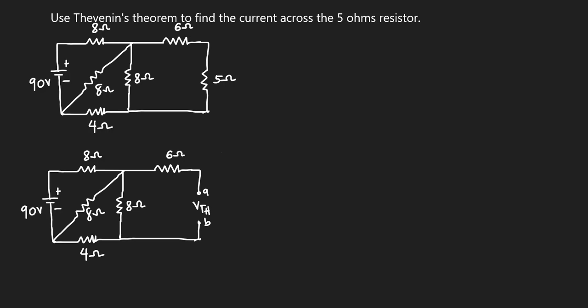To find the Vth, I will consider the left-hand part of this circuit. I will not consider the right part because there is an open circuit here. When current is coming from this direction and gets to this node, it will not move in that direction — it will go back.